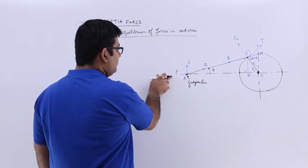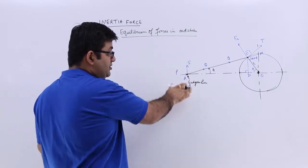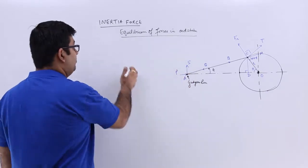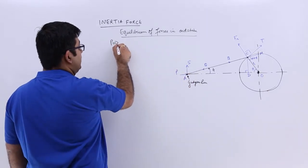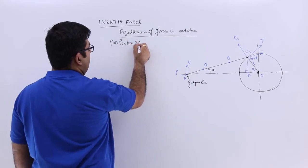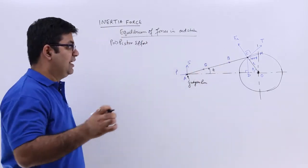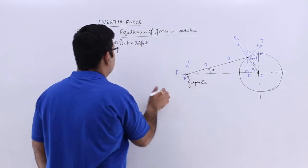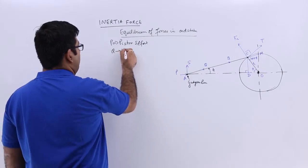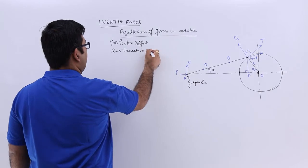So I can say that this pin, or this P, is the piston effort. This is pushing the piston in that direction. So P becomes the piston effort. Then you have this force Q. Q is the thrust in the conrod, or connecting rod.